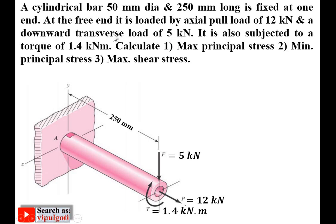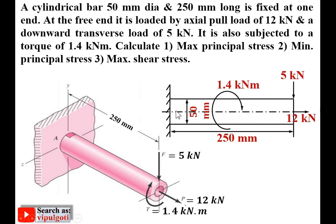A downward transverse load of 5 kN is at the free end, acting in the downward direction. Transverse load is always perpendicular to the axis of the rod. It is also subjected to a torque of 1.4 kN·m, also shown in the figure. Maximum principal stress means sigma 1 (also called major principal stress); minimum principal stress means sigma 2 (also called minor principal stress); maximum shear stress is tau max. This figure is to understand the situation; instead you can draw a 2D figure showing the cylindrical rod subjected to axial pull, transverse load, and torque.